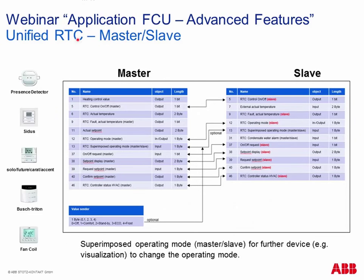To set up master-slave, you activate one device as master and the other as slave in the parameters. Dedicated group objects then become available — for example, 'RTC control on/off master' appears on the master side and the same appears on the slave side. You assign them the same group address and they work together. You do the same for all other group objects where you want information exchange. An optional 'superimposed operating mode' object is also available — a one-byte communication object with values off, comfort, standby, eco, frost — so a superior visualization can also change the operating mode, and both master and slave will respond accordingly.